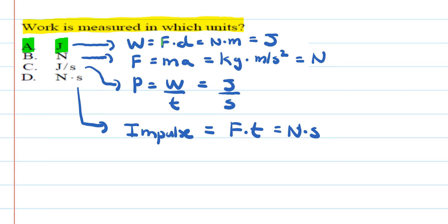Work is defined as force times distance, and the unit for work is joules. It's a good idea to look at the other three options too. When the units are newtons, we're measuring force. If the units are joules per second, this is measuring power. And newtons times seconds is measuring impulse.